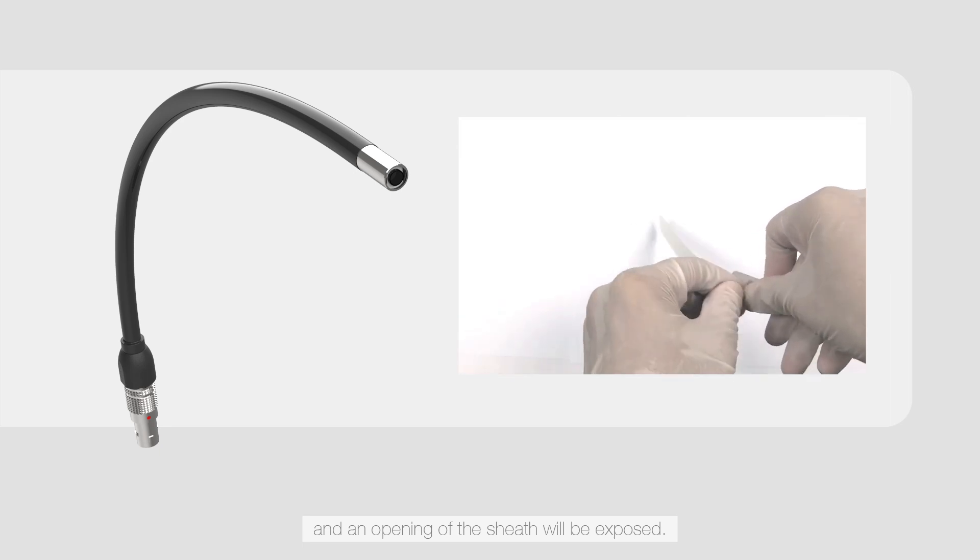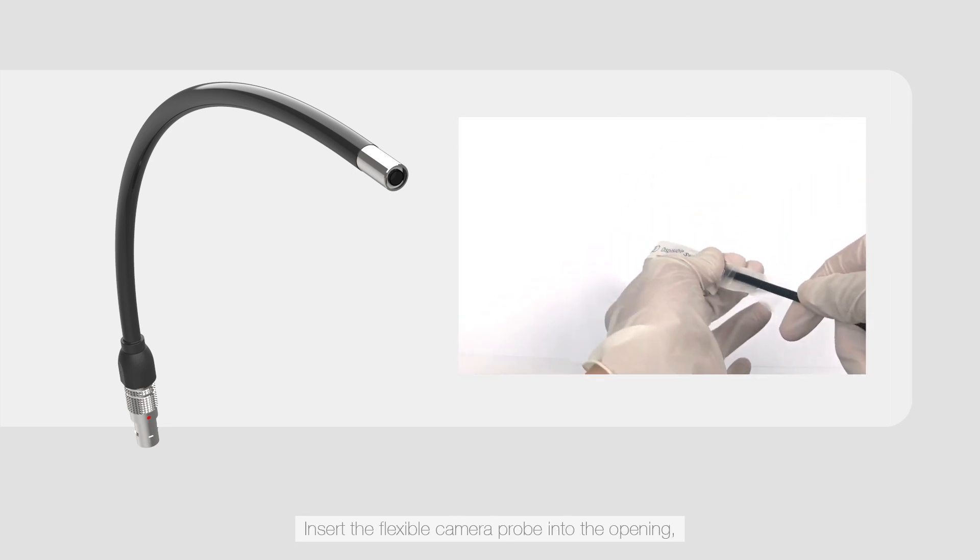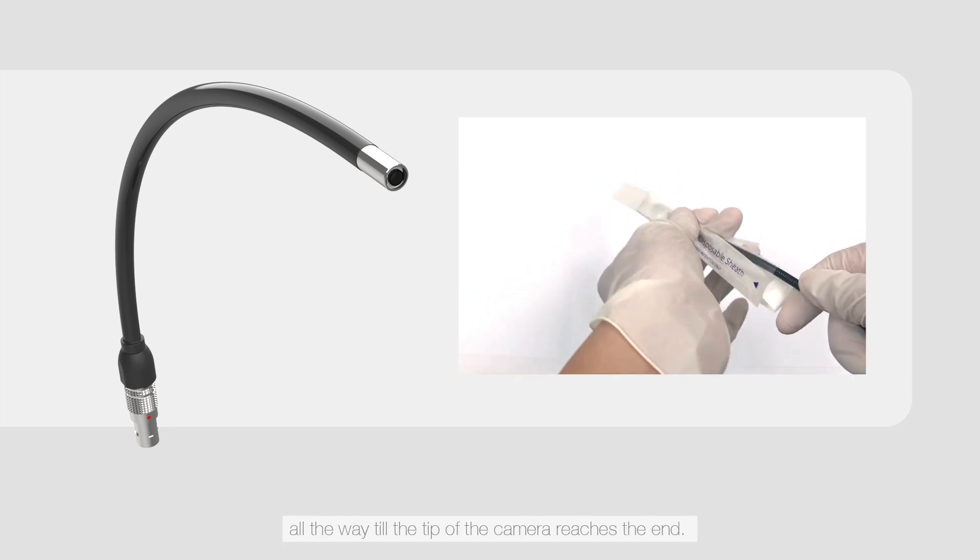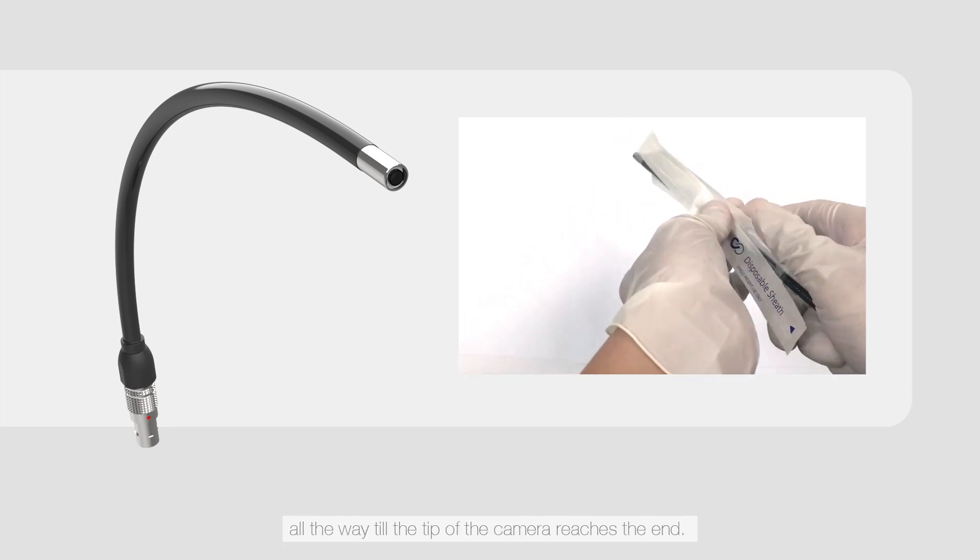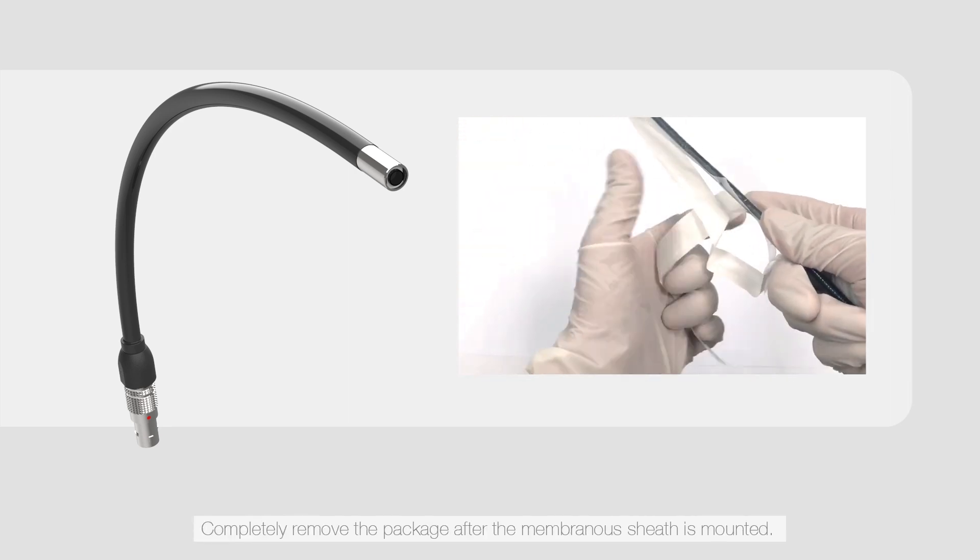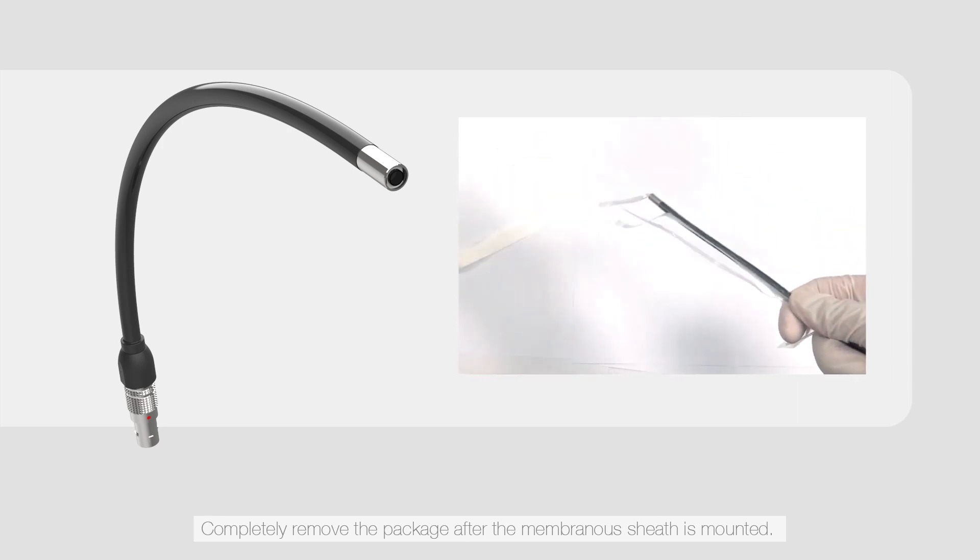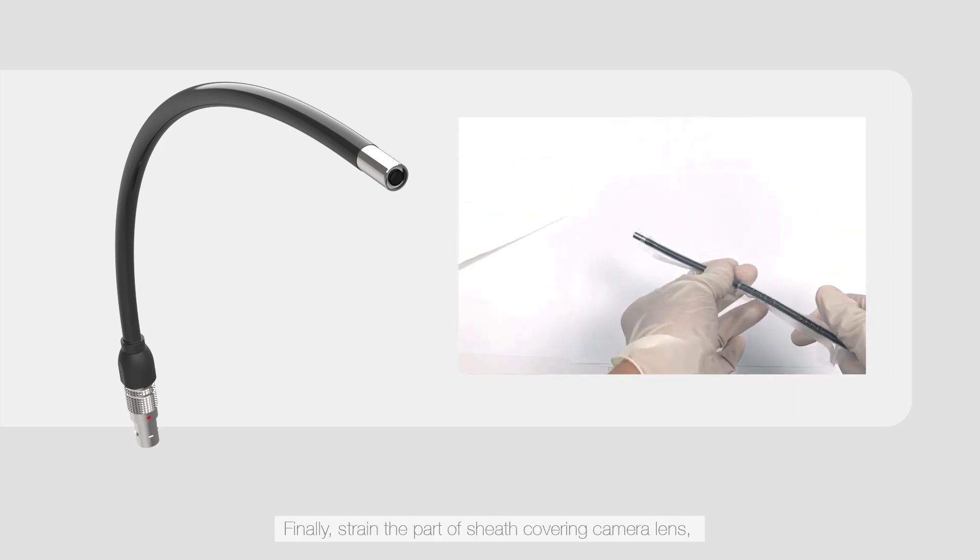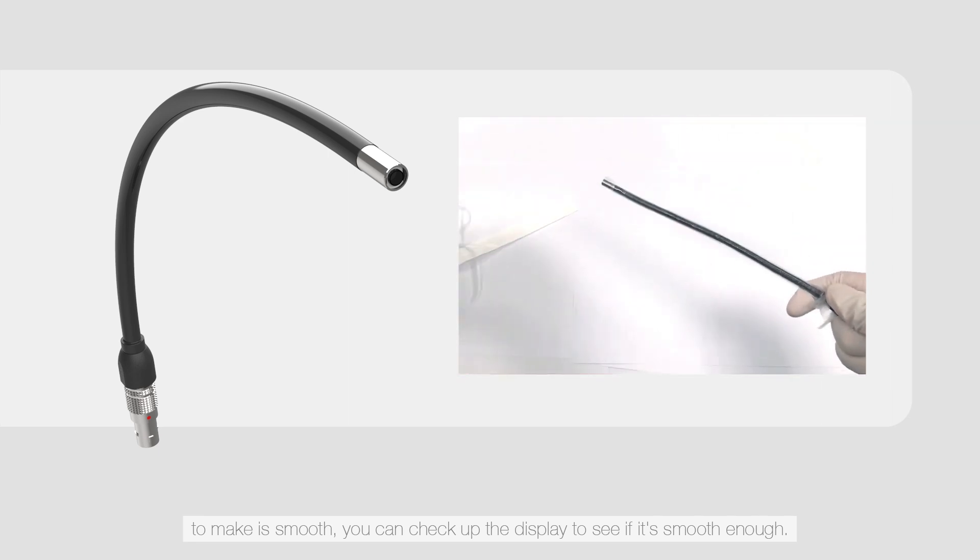Insert the flexible camera probe into the opening, all the way till the tip of the camera reaches the end. Completely remove the package after the membranous sheath is mounted. Finally, strain the part of sheath covering camera lens. To make it smooth, you can check the display to see if it's smooth enough.